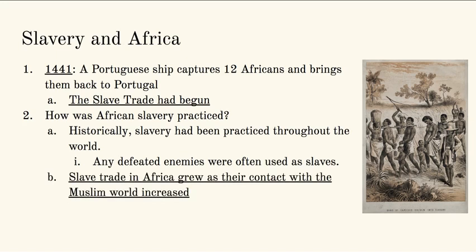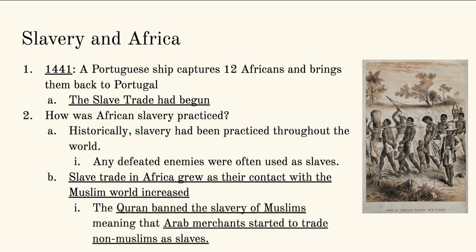What happens is the slave trade in Africa is going to grow as their contact with the Muslim world increases. Islam kind of starts in the Middle Eastern area and then spreads from there. The Quran — the holy book of Islam — actually banned the slavery of any Muslims. That means when you are an Arab merchant in the Middle East, the minute your slaves convert to Islam and become true Muslims, you can no longer treat them as a slave; they cannot be enslaved because the Quran says that's not allowed. So Arab merchants start to trade non-Muslim people as slaves. Africa, if not yet hearing about Islam, would have people captured in wars and battles and brought out as slaves because they are not Muslim.